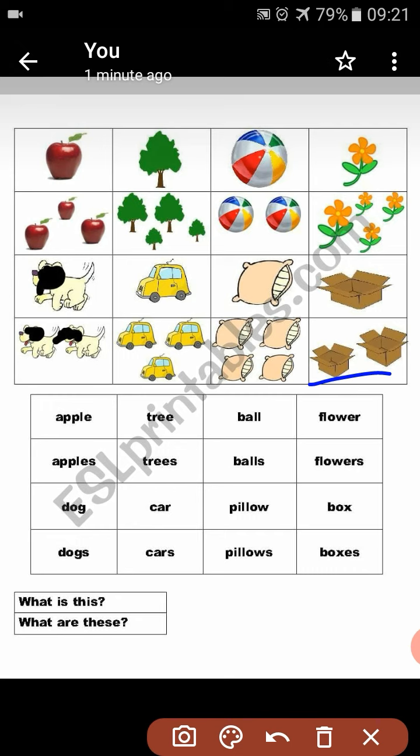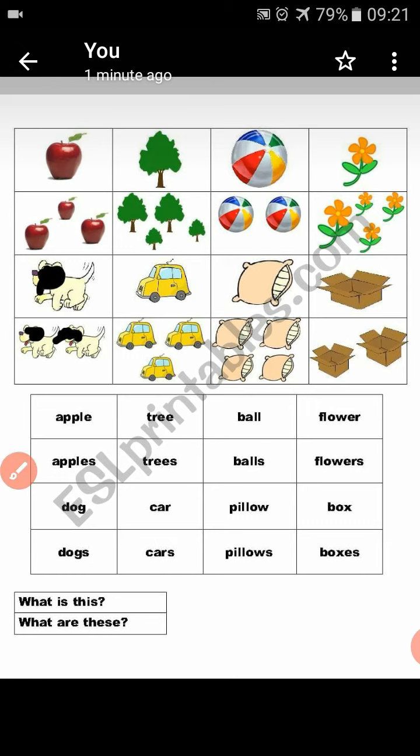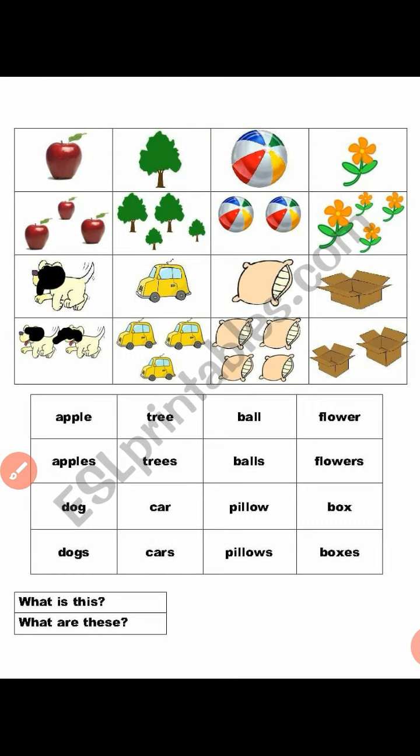So, things near you — what do you have to do? When you have a lot of things in your house, like fans, flowers, boxes, books — you have to ask at least five questions. If there is one thing, you will ask 'What is this?' If there is more than one, you will ask 'What are these?'